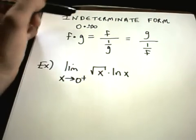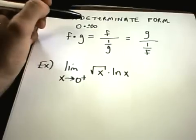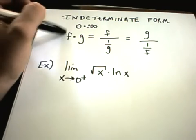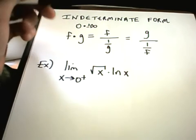The next type of indeterminate form we'll talk about is of the form 0 times positive or negative infinity, or vice versa, infinity times 0. And the idea is you have two functions, f of x times g of x.